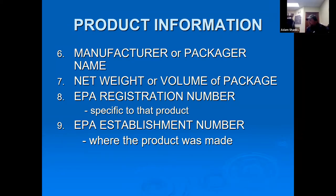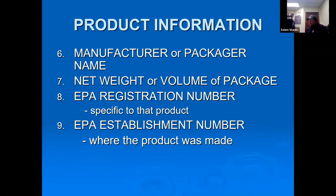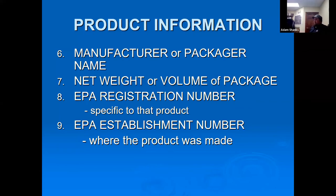The manufacturer or packager name and contact information will be on the label — useful for safety questions or warranty claims. The net weight or volume of the package is listed, whether it's a 12-ounce can of powder or a 2.5-gallon liquid. Towards the bottom you'll find the EPA registration number and EPA establishment number, specific to the product and where it was made — important for medical treatment if someone is exposed.